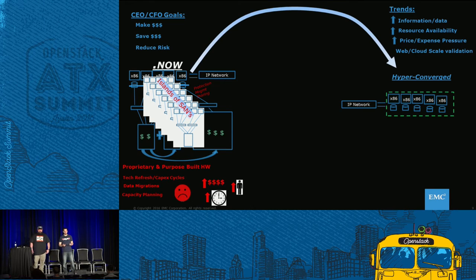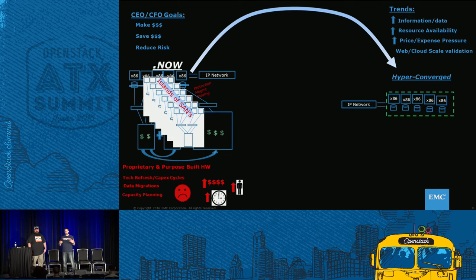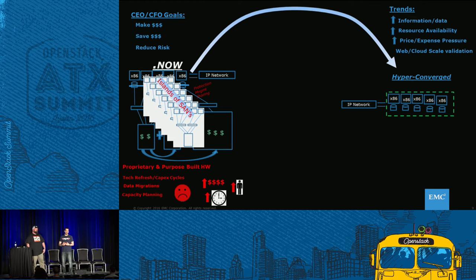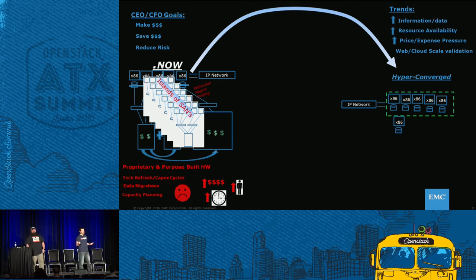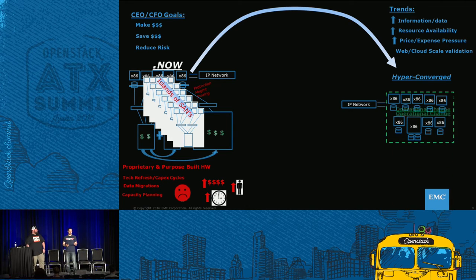There's a shift now to hyperconverged architectures — just using servers. SDS allows you to have your application sitting on the same server as storage and compute. That gives you maximum cost savings, a lot of flexibility, and reduces administration headaches. When you want more storage or compute, you just add more servers — it's flexible and grows how you need it to grow. There are also operational cost savings achievable with this model.